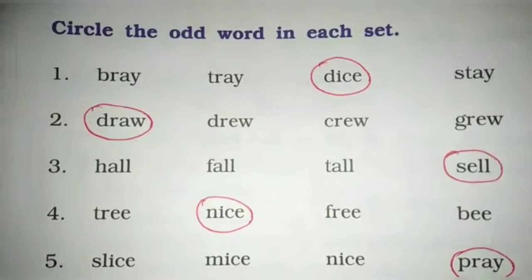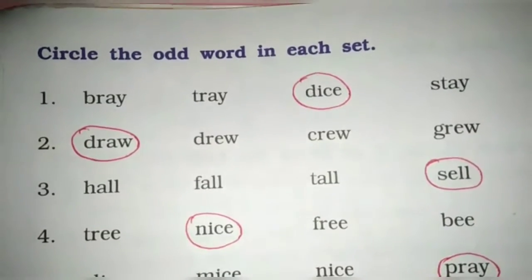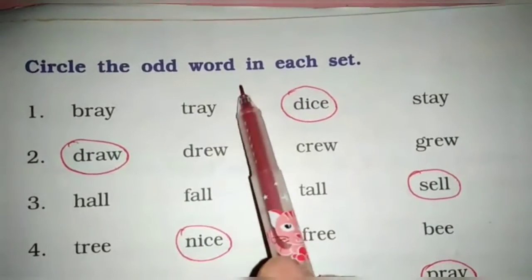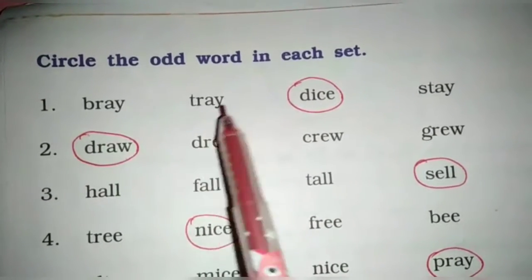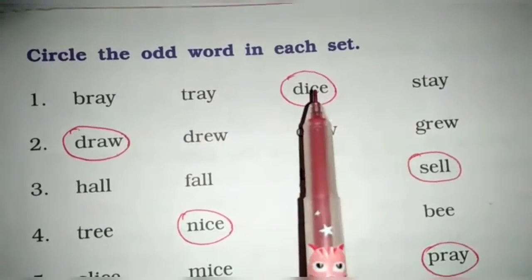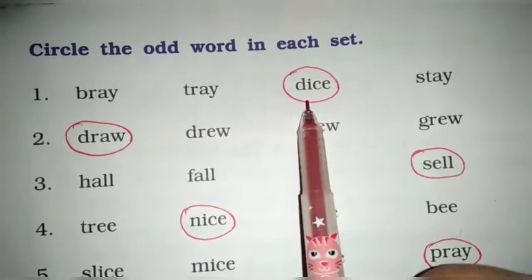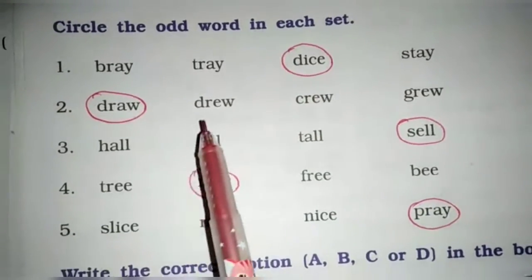Now page number 92. Next exercise. Circle the odd word in each set. Bray, tray, dice and steak. So which one is odd? Dice. So complete in your homework.